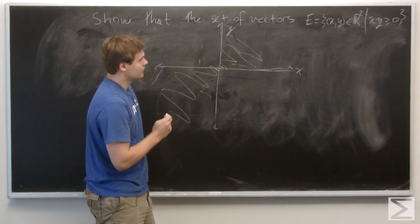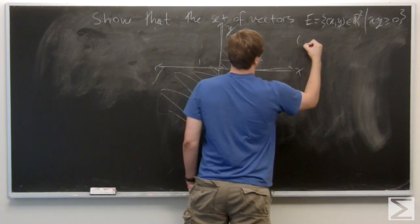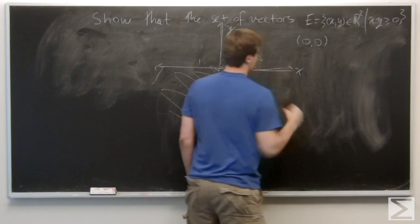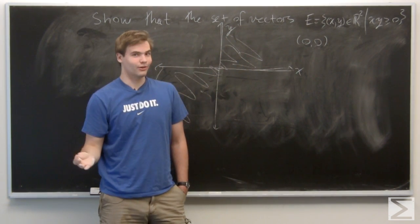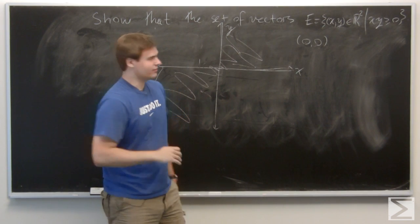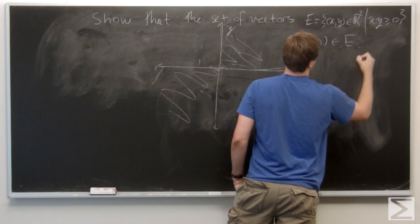So in particular, if we take the origin, which is the vector (0,0), the origin is in E because 0 times 0 is 0, which is certainly greater than or equal to 0. So we can say that's in E, check.